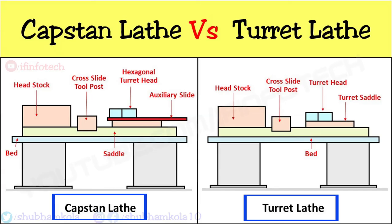Other functions like seating of the tool, clamping of the workpiece, and cooling of processes are to be done manually. These lathe machines can be used to machine from small to large workpieces and are costlier than engine lathes because of their complex construction. So this is all about capstan and turret lathes.